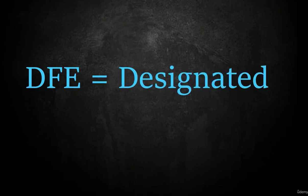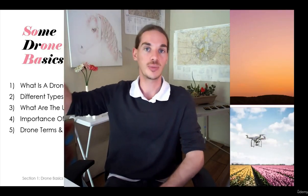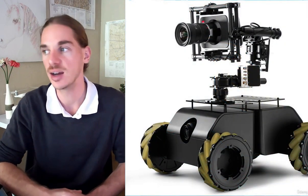DFE stands for designated flight examination, or designated flight examiner depending on context. The examination is your practical skills test after completing your training. The DFE examiner is the person who will test you at that skills test. UAV stands for unmanned aerial vehicle — a vehicle operating in the sky. ROV stands for remotely operated vehicle, which is similar but can refer to drones on the ground or even in water, such as submarine drones — those are generally called ROVs rather than drones.